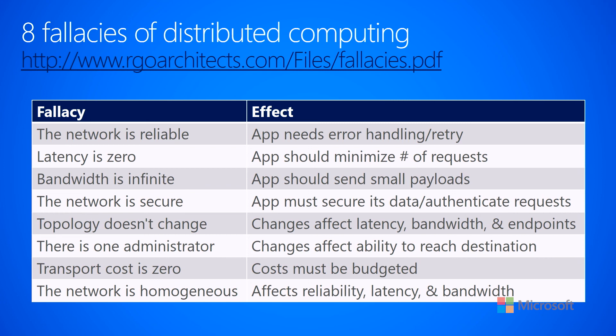The eighth and last fallacy is that the network is homogeneous. This affects reliability, latency, and bandwidth. In other words, it may not be all the same networking hardware — all the networking cards may not be the same speed; some of it might be fiber optics, some of it might be copper. Don't make any assumptions about the network. All of this boils down to: don't make assumptions, and in order to not do that, you're going to have to write code in a different way in order to be resilient against these fallacies of distributed computing.